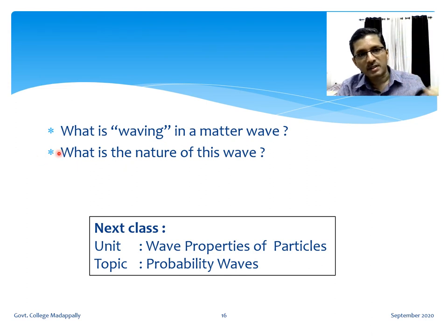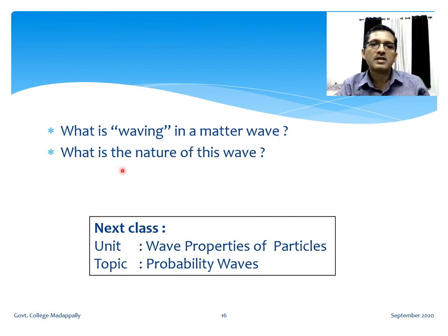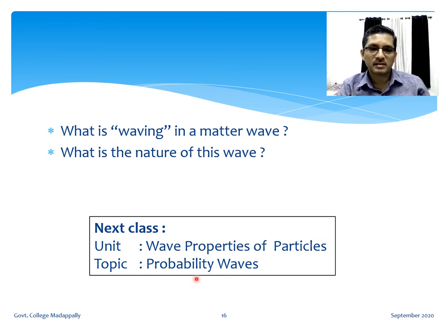With this, let us conclude today's discussion on electron diffraction and particle diffraction in general. Let us come back to our matter wave and ask: what is waving in a matter wave? What is varying? What is the nature of this wave? This we will discuss in the next class, whose topic will be probability waves.